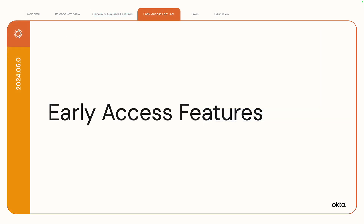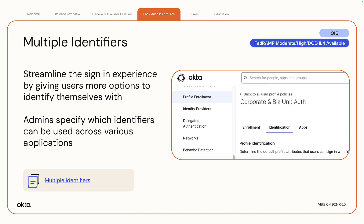Let's wrap up with a look at early access features. Multiple identifiers. Enhancements to the profile enrollment policy allow configuration of identifiers that can be leveraged for Okta's sign-in flows using custom profile attributes.